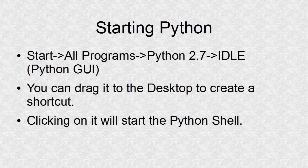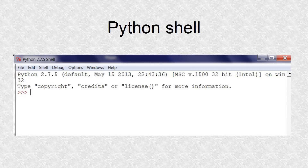Once you have downloaded Python, you can start it like any program by going to the Start menu. Then select All Programs, Python 2.7, and IDLE Python GUI. You can also drag this to the desktop to create a shortcut and click on it to run it. Clicking on IDLE Python GUI will start the shell.